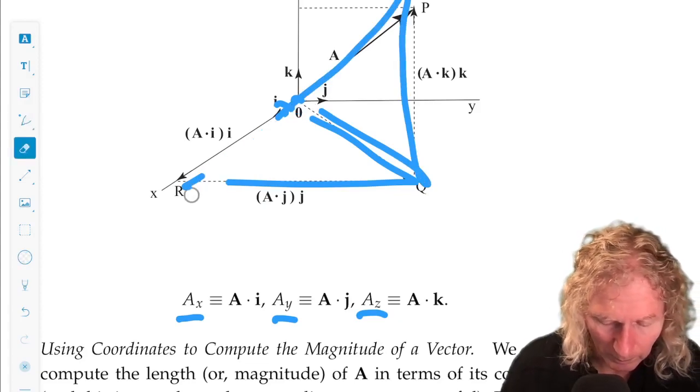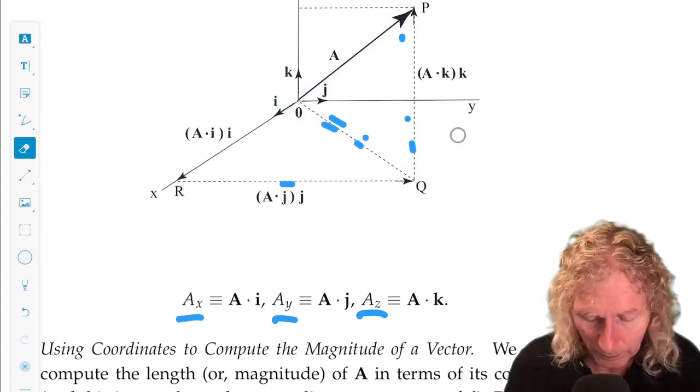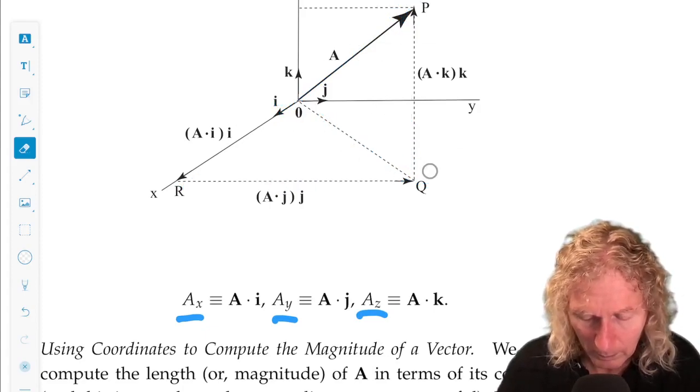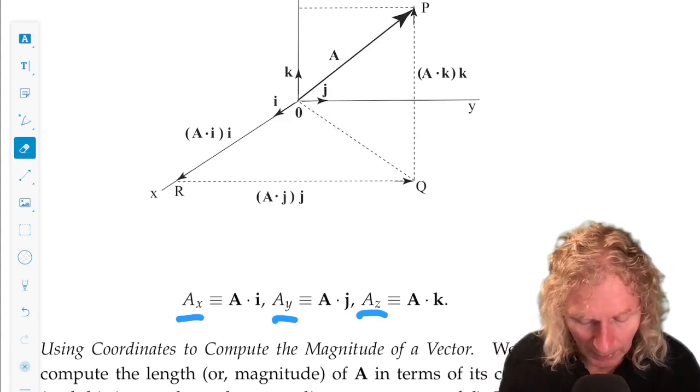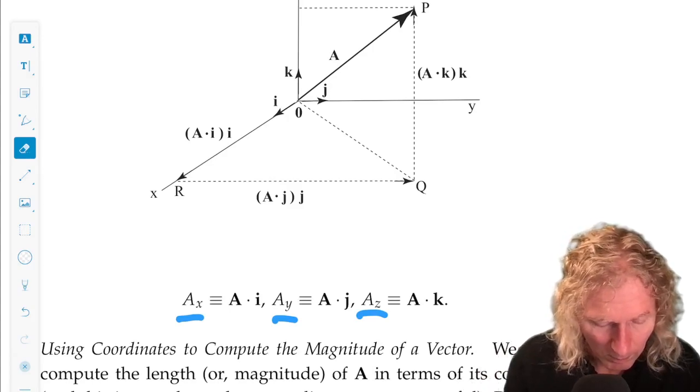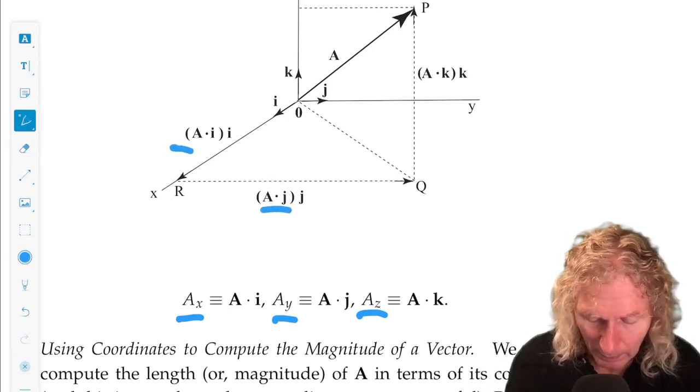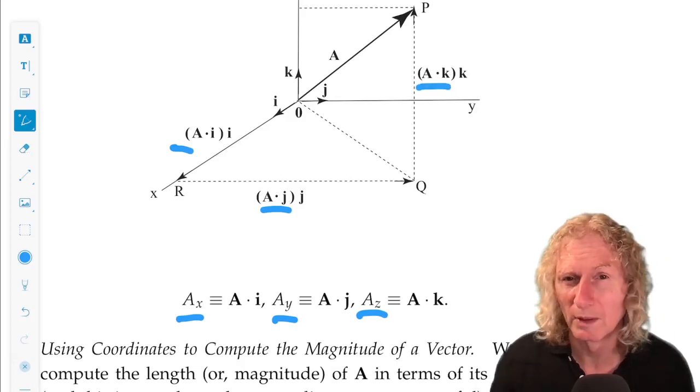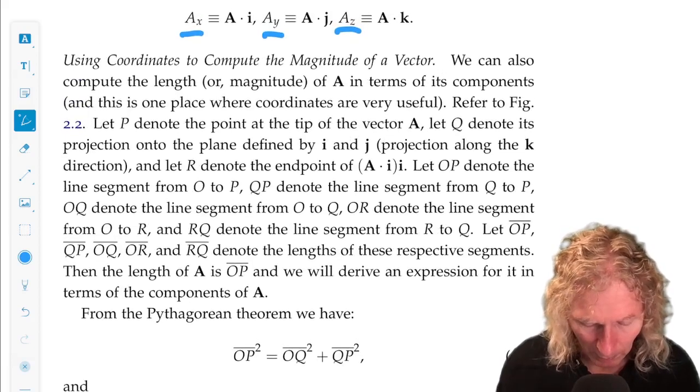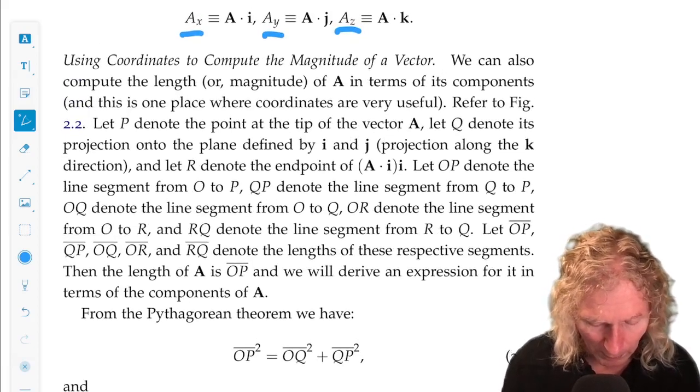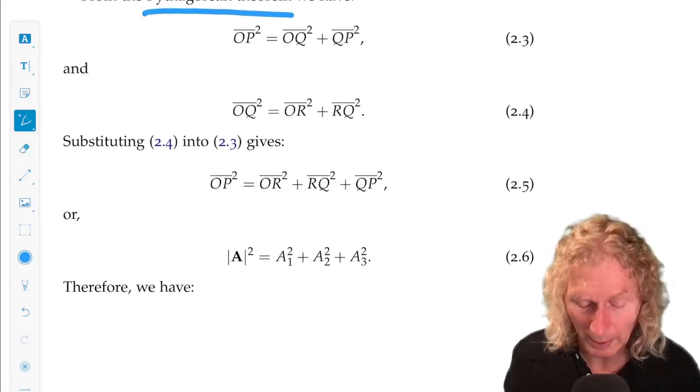With two right triangles, we can use the Pythagorean theorem to get the hypotenuses from the sides, and we know we can easily get the lengths of the various sides from the components. Now, I know I'm going over this rather quickly, but there's a little argument down here using the Pythagorean theorem, and I will leave it to you to go through that.